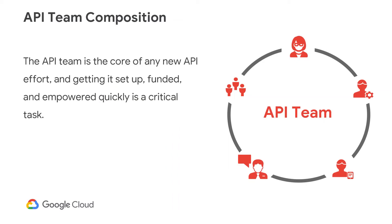There are five main roles when it comes to a good API team. They are the API team leader, the architect, the API developers, the evangelist, and the extended team. Let's spend the next few minutes going over each one.